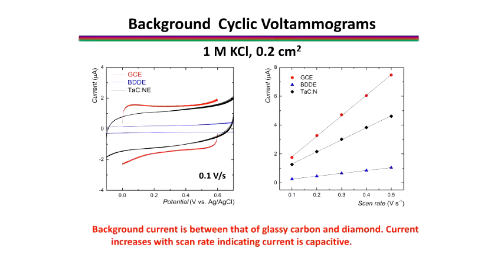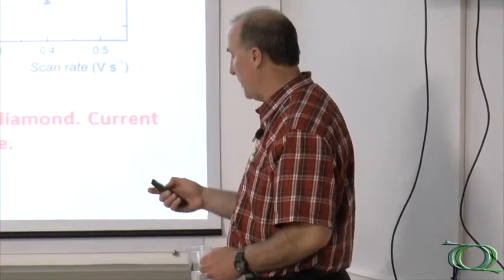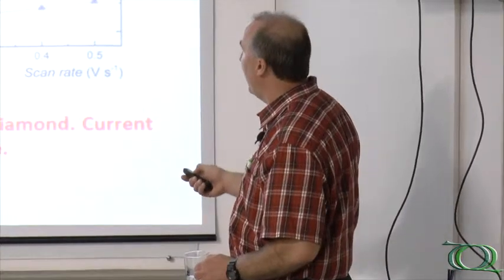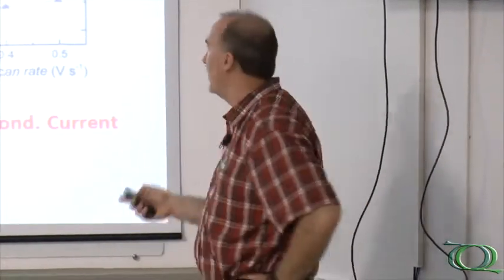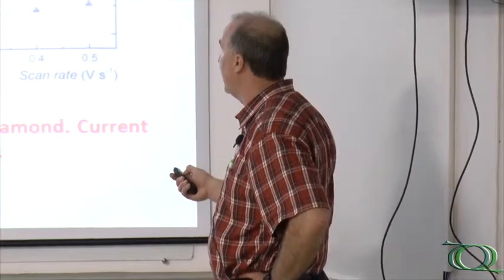If you do another measurement here and look at the scan rate dependence, that tells us that the background current in this potential region is capacitive in nature. Plotting over here, background signals for the TAC, the black, a piece of glassy carbon, the red, and our diamond film here the blue. You can see the background signal for the TAC is larger than the diamond, but not as large as the glassy carbon. And over here we can see that all of those currents for all three electrodes increase linearly with the scan rate. They're all capacitive in nature. Slope difference is due to the capacitance value difference between each of the electrodes. Glassy carbon has a larger capacitance than TAC, and TAC has a larger capacitance than the diamond surface does.